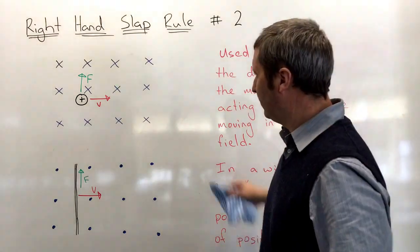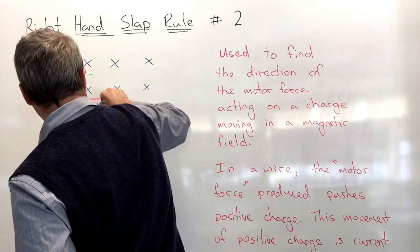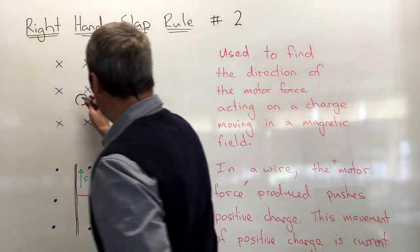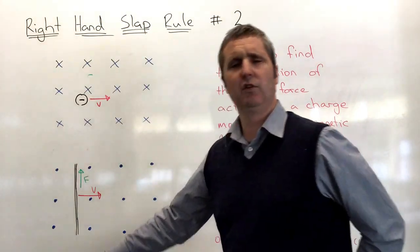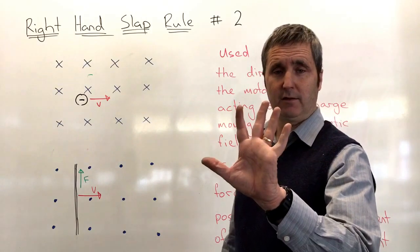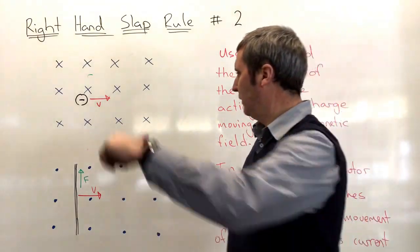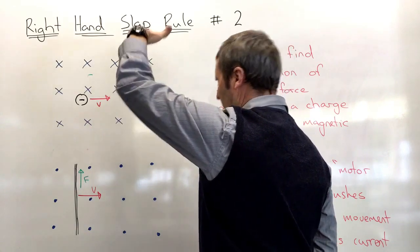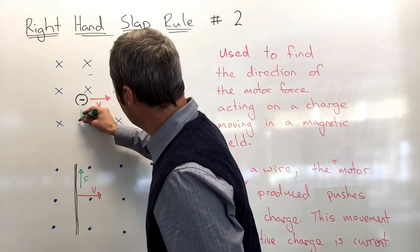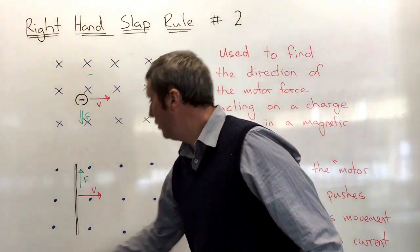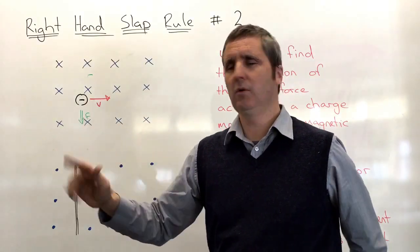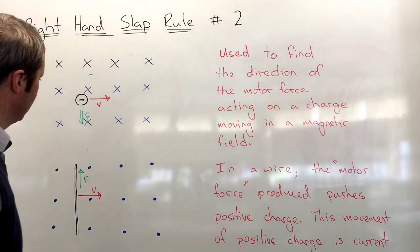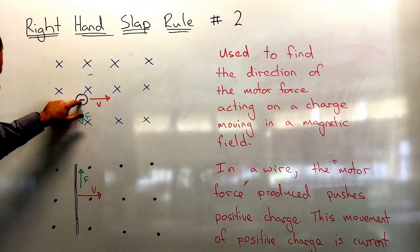What if the particle is negative instead of positive? For a negative particle, we use the left hand instead. We do the same again — fingers into the board, thumb in the direction of motion — and the force would be going downwards, opposite to what we had for a positive charge. You can also use the right-hand slap rule and just give the opposite direction to the force, or you can use the left-hand slap rule.